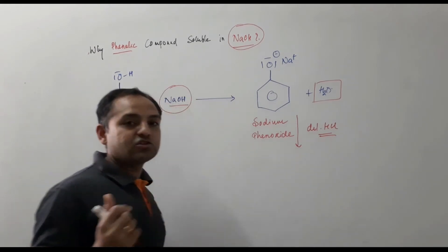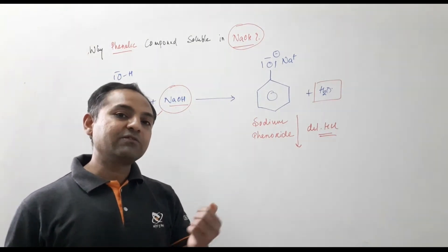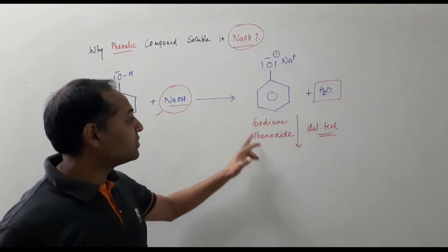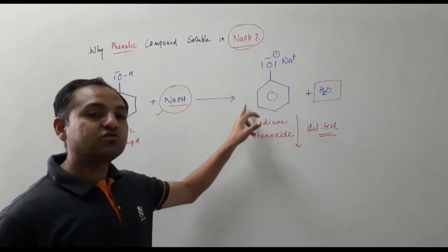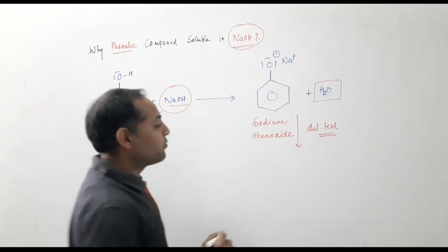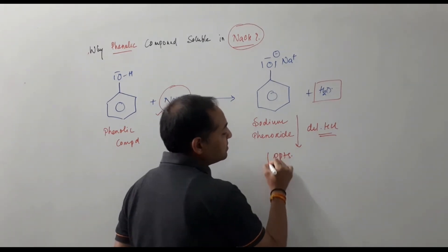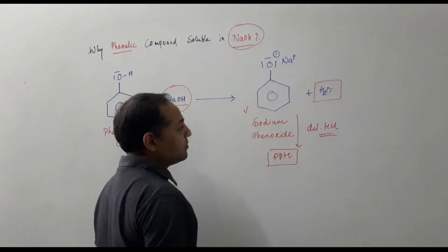When in test tube you have taken phenolic compound, then add dilute NaOH and vigorously shake it. If your compound is soluble because of the salt formation, sodium phenoxide formation, and then add dilute HCl drop wise. If you get the precipitates, that means your compound is a phenolic compound.